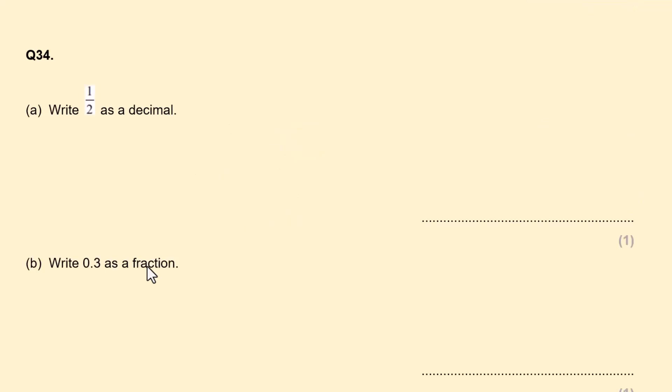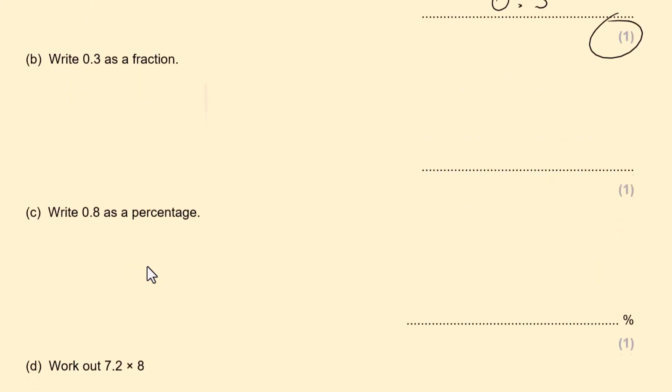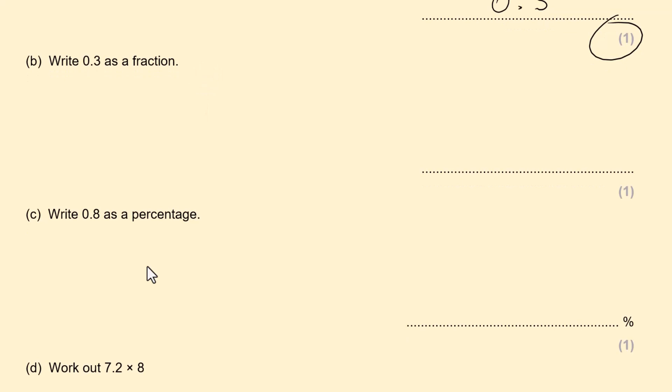Write half as a decimal. So half as a decimal is 0.5. 0.3 as a fraction. Similar question to the one we did before. So 3 out of 10. So 3 divided by 10 is 0.3. We cannot simplify it. And the question did not ask us to simplify it. So leave it as 3 over 10.